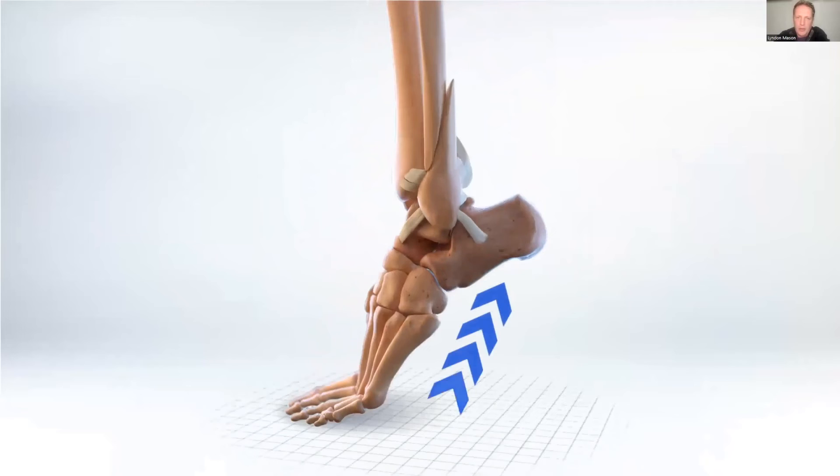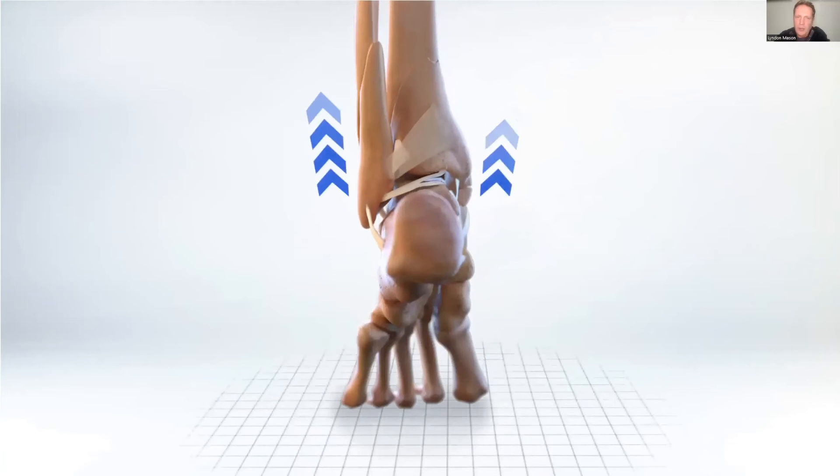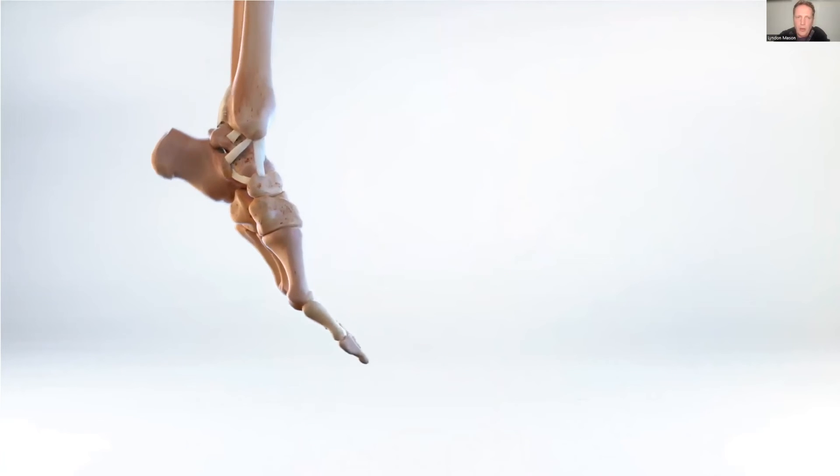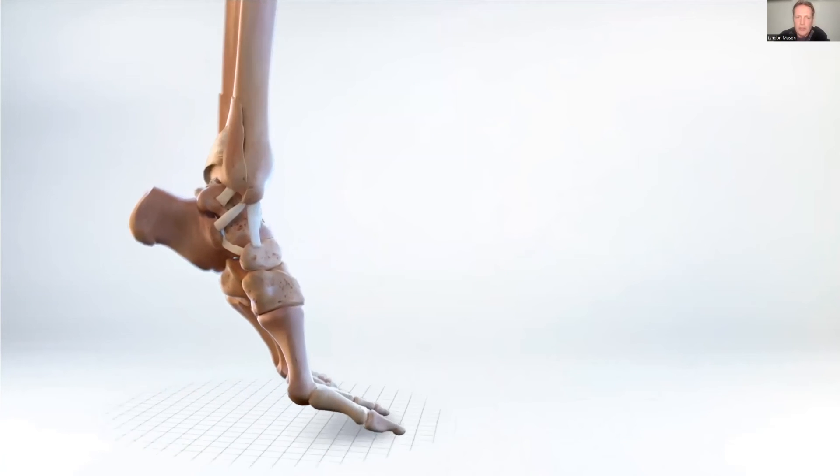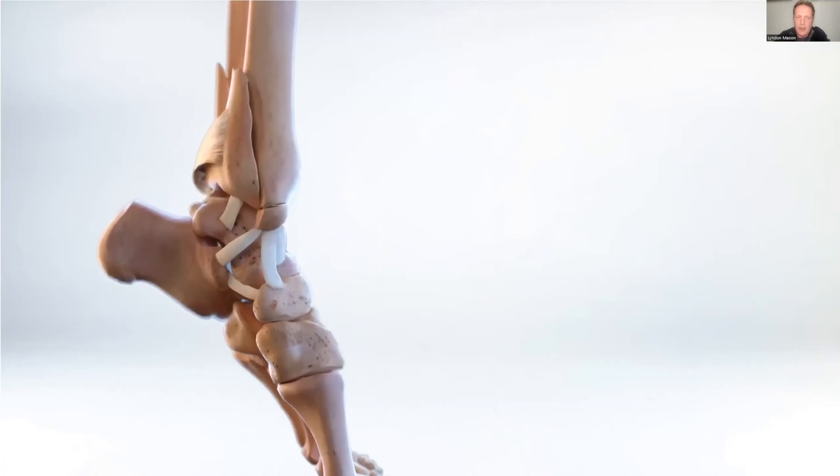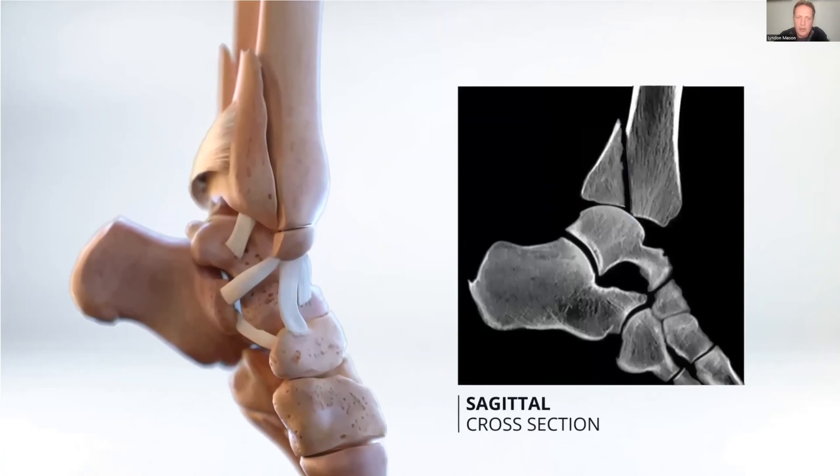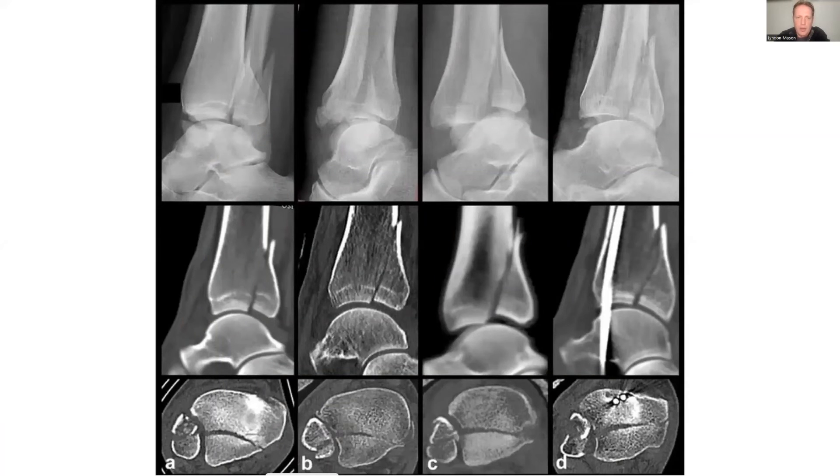Your true posterior pilon is as you expect: a plantar flexed foot with axial load. Usually the fibula goes in the same direction, so it's usually in the same path as your posterior malleolar fracture. Due to the pull of the deltoid, you often get a Y-type fracture on the medial side because the anterior colliculus gets pulled off, which will show up in quite a few cases coming up now. This is from Bartonicek's paper and it's very typical—this axial loaded pilon is very predictable.